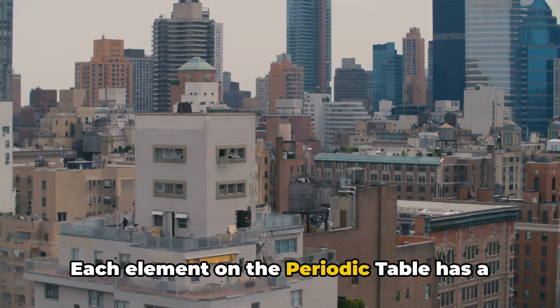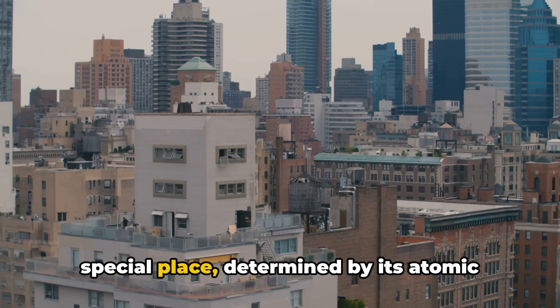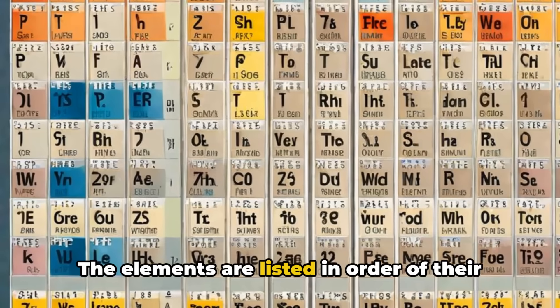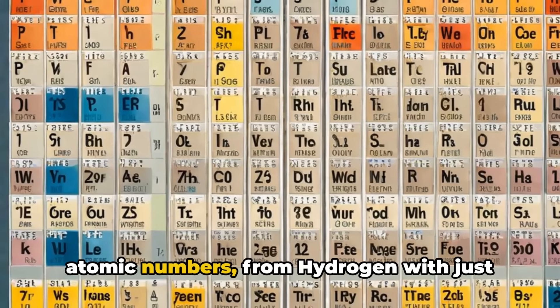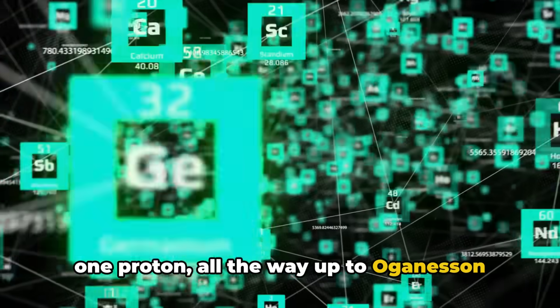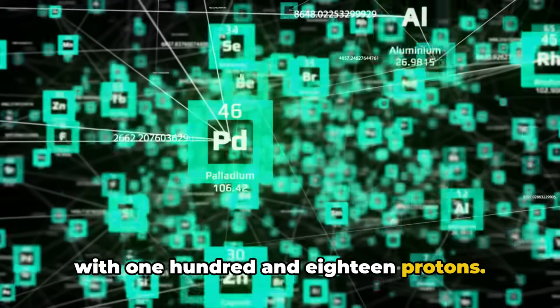Each element on the periodic table has a special place, determined by its atomic number. That's the number of protons in an atom's nucleus. The elements are listed in order of their atomic numbers, from hydrogen with just one proton, all the way up to organesson with 118 protons.